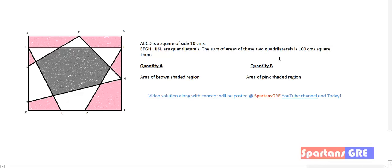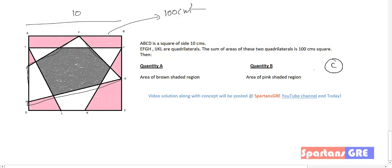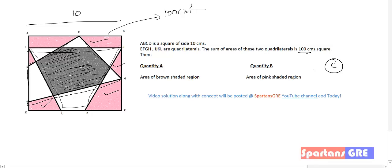Now let's solve the second question. The answer will be C, meaning both quantity A and B are equal. The question has a square A, B, C, D, H of side 10 cm, so the area of the outer figure is 100 cm². There are two quadrilaterals — EFGH and a second one. The question clearly states that the sum of the areas of these two quadrilaterals is 100 cm². So if placed side by side they equal the big square's area, but instead they overlap. Because of this overlapping area — the brown area — we get extra spaces. Therefore the area of the brown space to the pink space is 1:1.